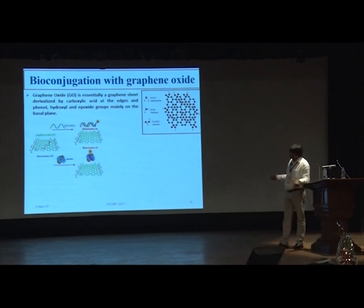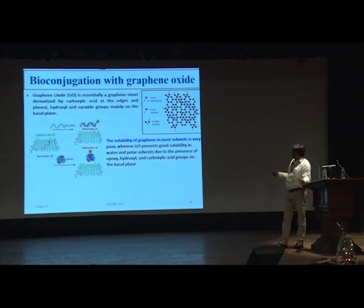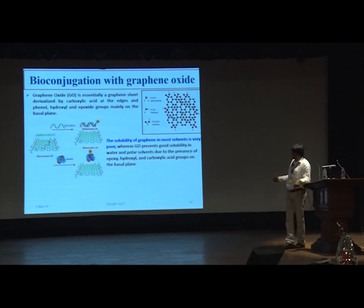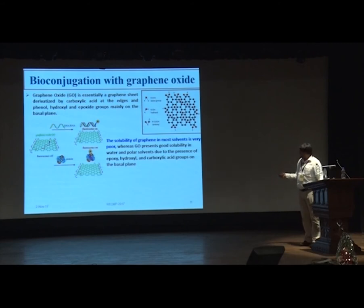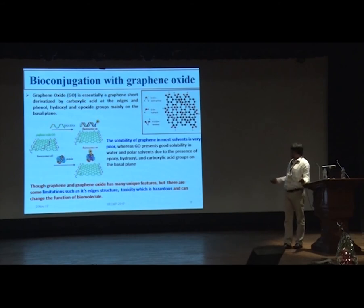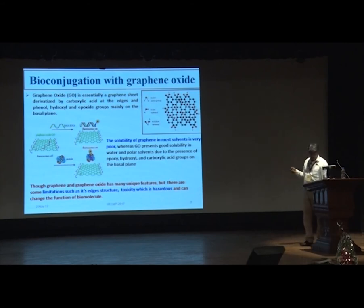Graphene oxide offered some solution — it is a graphene derivative with carboxyl, hydroxyl, and epoxy groups mainly on the basal plane. The solubility of graphene in most solvents is very poor, whereas graphene oxide has good solubility in water and polar solvents due to the presence of epoxy, hydroxyl, and carboxylic acid groups. Though graphene and graphene oxide have been extensively used, they have limitations such as their edge structure toxicity, which is hazardous and can alter the function of biomolecules.